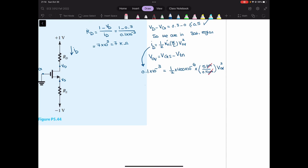So here I will have 0.1 multiplied by 10 to the negative 3 equals. Now 1 over 2 multiplied by 400 is 200. 200 multiplied by 10 to the negative 6 is 2 multiplied by 10 to the negative 4, right? Multiplied by 5 over 0.4. So 5 over 0.4 can be written as 50 over 4 multiplied by VOV squared.